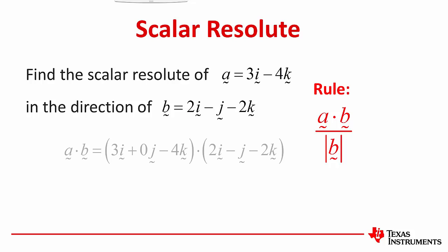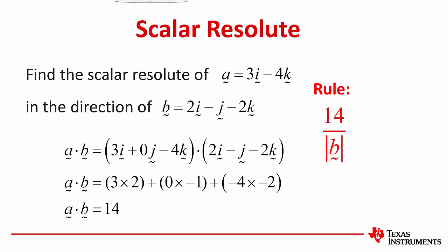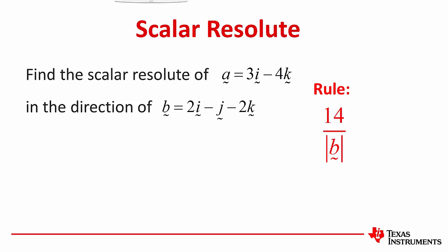There's the rule that we determined for the scalar resolute of A on B. So we do the dot product, multiply the respective components, add them together, and we get the dot product of AB equal to 14. Place that in the formula. Next, calculate the magnitude of vector B. For that, we apply Pythagoras' theorem in three dimensions and come out with the result of 3. So the scalar resolute of vector A in the direction of vector B is simply 14 over 3.